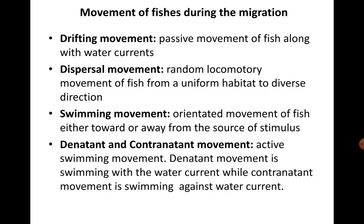Different fishes exhibit different kinds of movement when they migrate. Drifting movement is a passive movement of fish along with the water currents. Dispersal movement is a random locomotory movement of fish from a uniform habitat to diverse directions — they start from one point and disperse in different directions, hence the name dispersal movement.